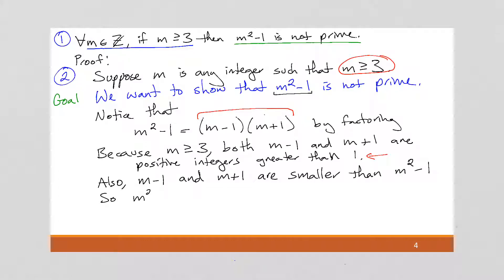So, m squared minus 1 is a product of two integers greater than 1 and less than m squared minus 1. So, it turns out m squared minus 1 is composite, and certainly not prime, by the definition of prime. By the definition of prime, remember that the only two factors must be 1 and the number itself. And here we found an additional two factors.